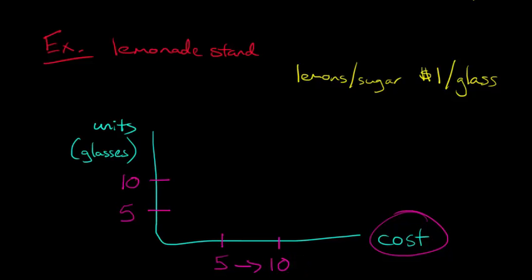And this makes sense if you think about it. We made more lemonade, more glasses of lemonade. So we needed to use more materials, more ingredients. The idea being that we've seen that the cost changes based on how many units we actually made, how many glasses of lemonade.